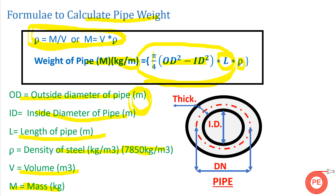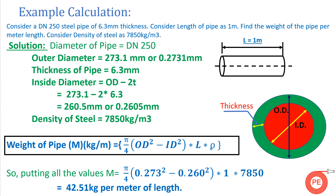Let's see how to calculate the weight of a pipe with the help of an example. Consider a DN 250 steel pipe of thickness 6.3 mm and length 1 meter. We need to calculate the weight per meter length. Density of steel is given as 7850 kg/m³. For a DN 250 pipe, the outside diameter is 273.1 mm. The outside diameter is fixed for a given DN; only the thickness and inside diameter vary.